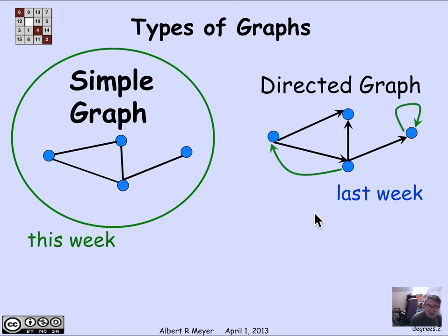A special thing about directed graphs is that it's possible to have an arrow going in each direction between two vertices. But when we have undirected edges like this, that doesn't happen. So there's only one edge between a pair of vertices in a simple graph. In addition, a directed graph might have a self-loop, an edge that starts and ends at the same vertex. And those are also disallowed in simple graphs.